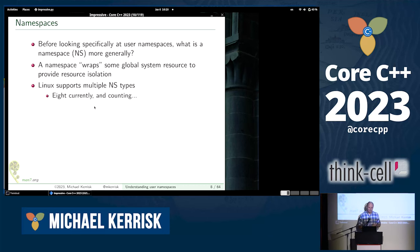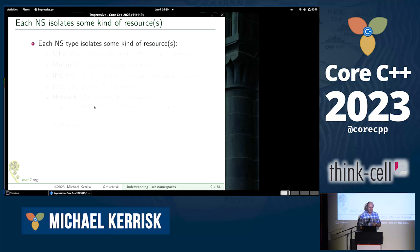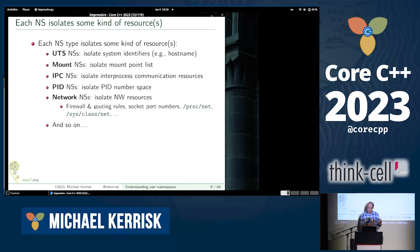Currently there are eight namespace types, and counting — a new one appears every now and then. The most recent one appeared in 2020. Each one of those namespace types isolates some kind of resource.